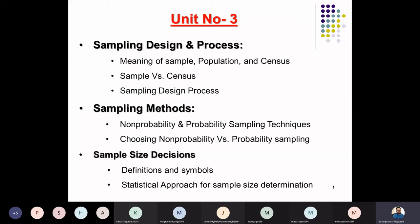In non-probability sampling techniques we have techniques like convenience sampling, judgmental sampling, quota sampling, and snowball sampling. In probability sampling techniques we have techniques like simple random sampling, systematic sampling, stratified sampling, and cluster sampling.